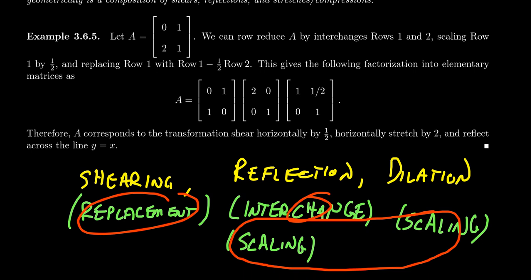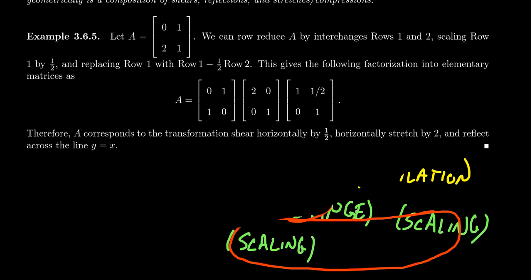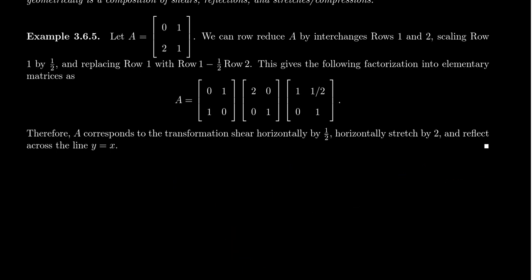Now, if we think of this as a geometric transformation, what does multiplying by A do to a generic vector? Let's take a generic vector x and y. If we were to multiply A by (x, y) using this factorization, the matrix on the far right is actually going to be the first matrix that acts on (x, y). So this would be our first matrix. And looking at that matrix, this is a shearing matrix. It's upper triangular, so that means it's going to be a horizontal shear by a factor of one half.